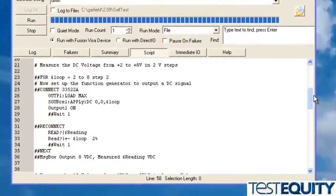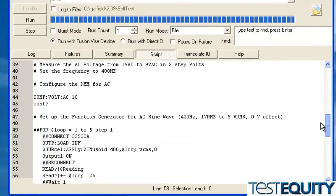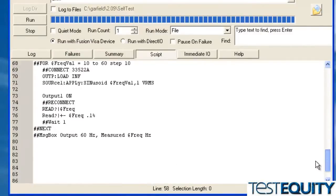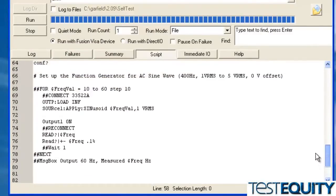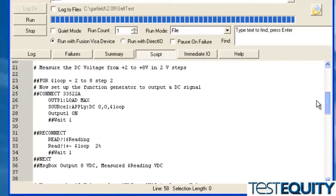Now I've written a program that I designed for the 34401A, and I'm going to run this same program on our new 34461A, and the results should be the same. So I'll quickly go through and make a DC measurement, make an AC measurement, and then make a frequency measurement, and you'll see the results.